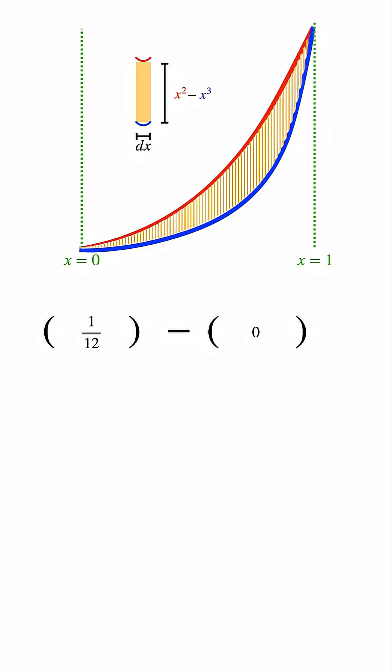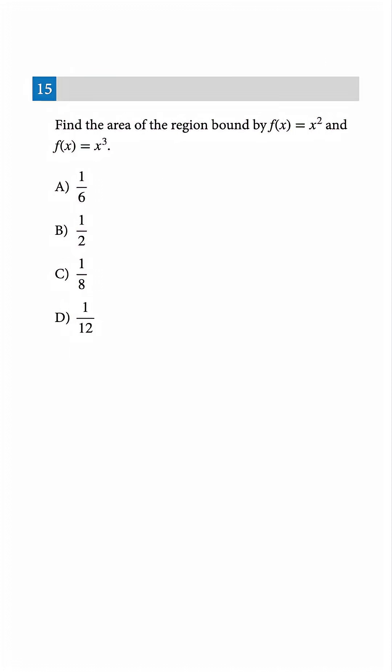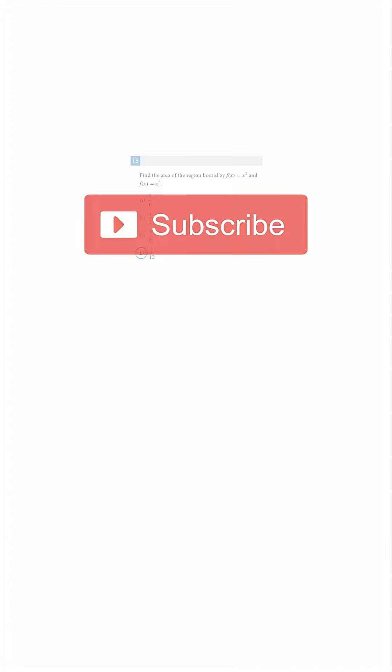So the total area between f of x equals x squared and f of x equals x cubed is one-twelfth square units. Hence, the answer is D. Follow for more math tips.